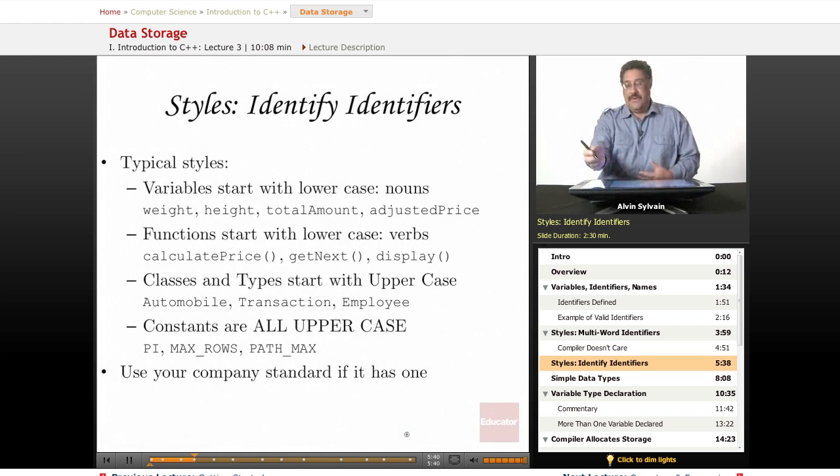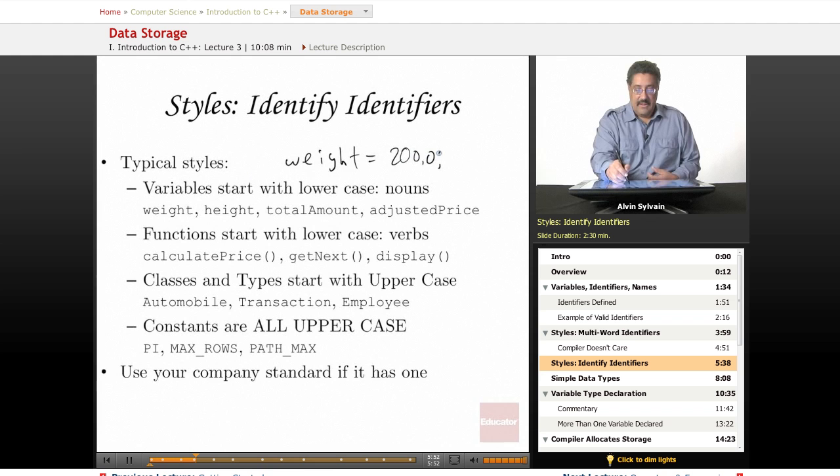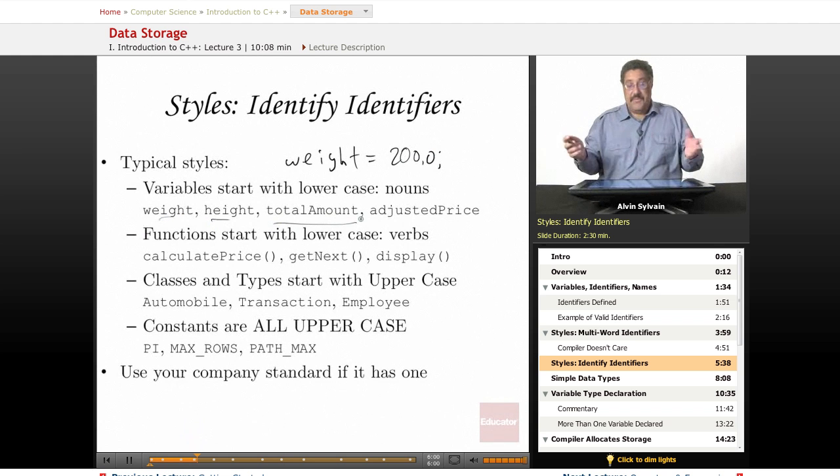So here's some typical styles. Variables starting with a lower case. A variable such as, for example, weight equals 200. So we start it with a lower case variable. We have weight, we have height, we have total amount. You work some calculations to figure out what your total amount is, add all your different amounts, and keep a variable called total amount. Adjusted price, you add taxes, what have you.